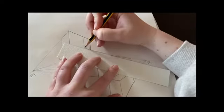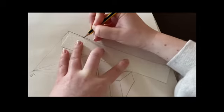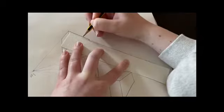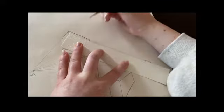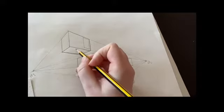Then I'm going to join the bottom of that line to my vanishing point two because it's on the right hand side of the box, and also the top of that line to vanishing point two. That's going to give me the top and bottom of my cutout shape making sure those lines are in perspective.